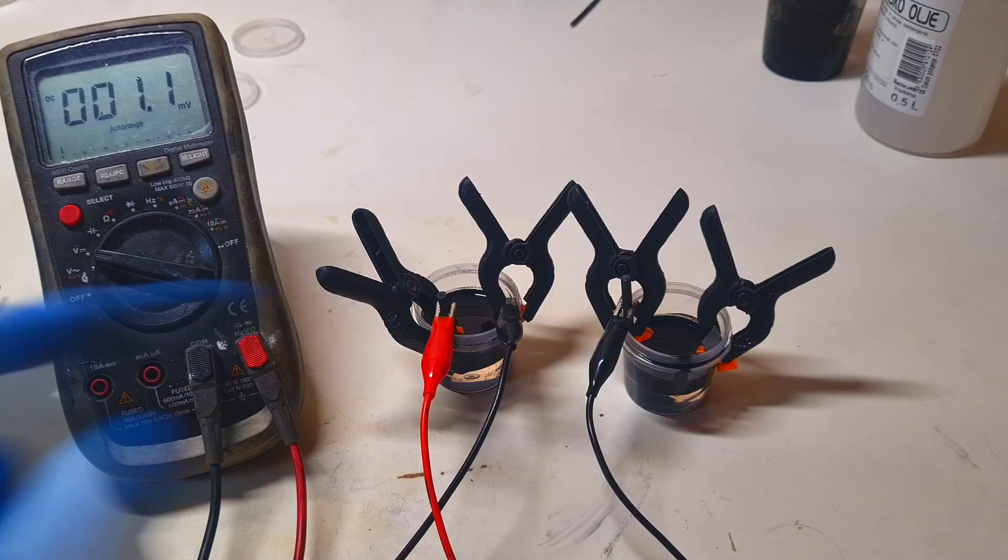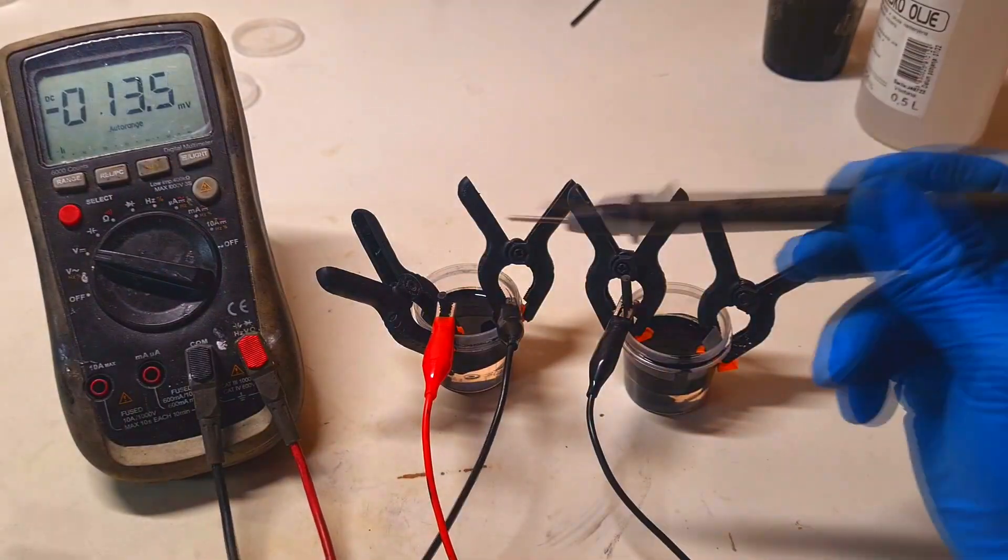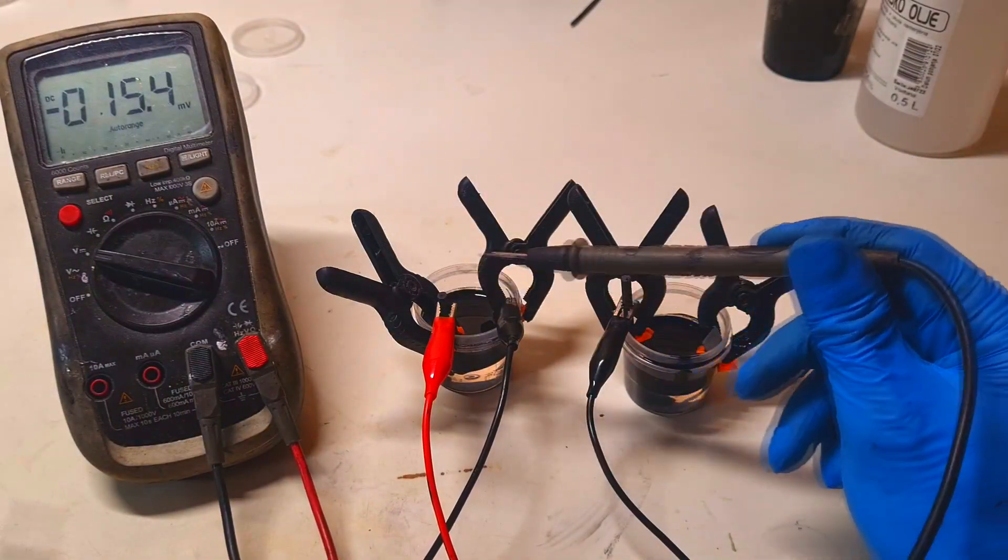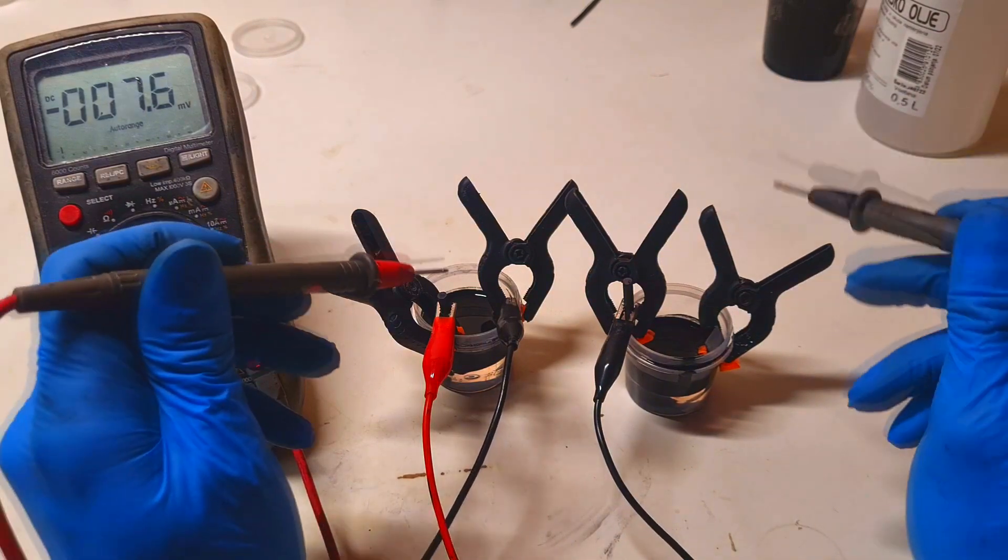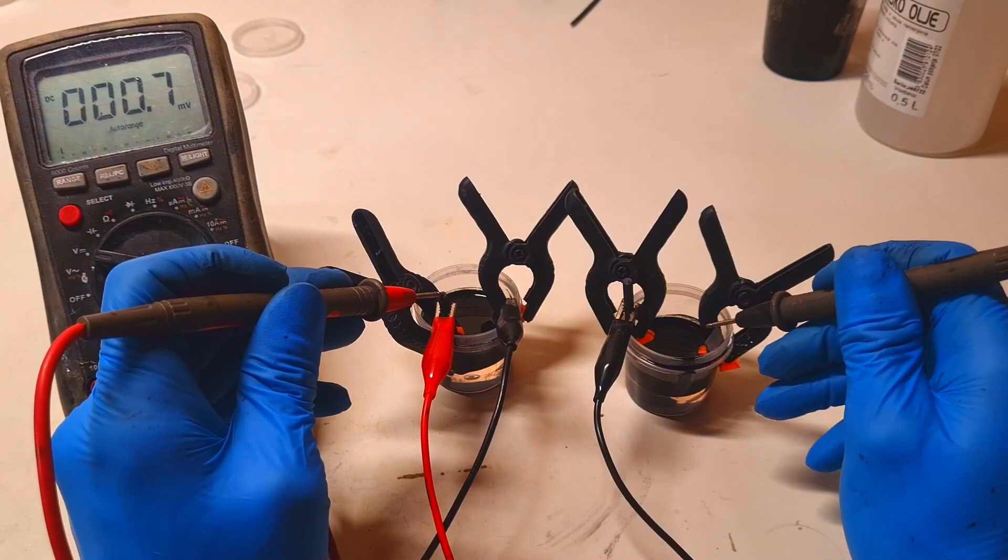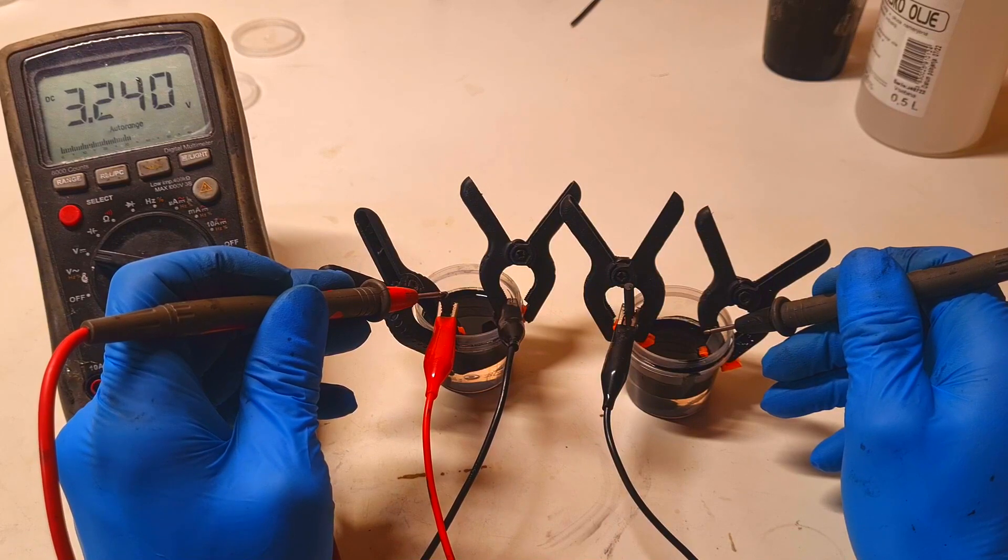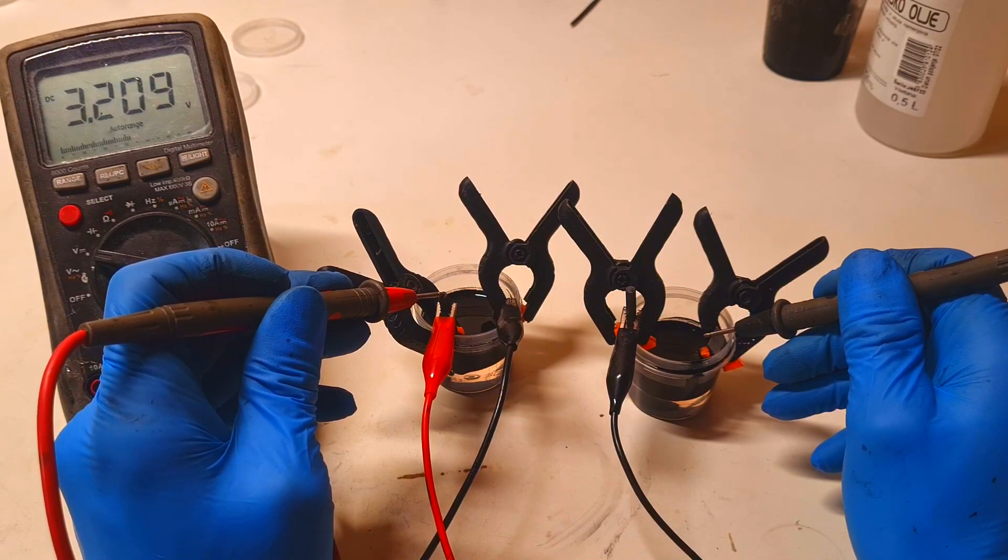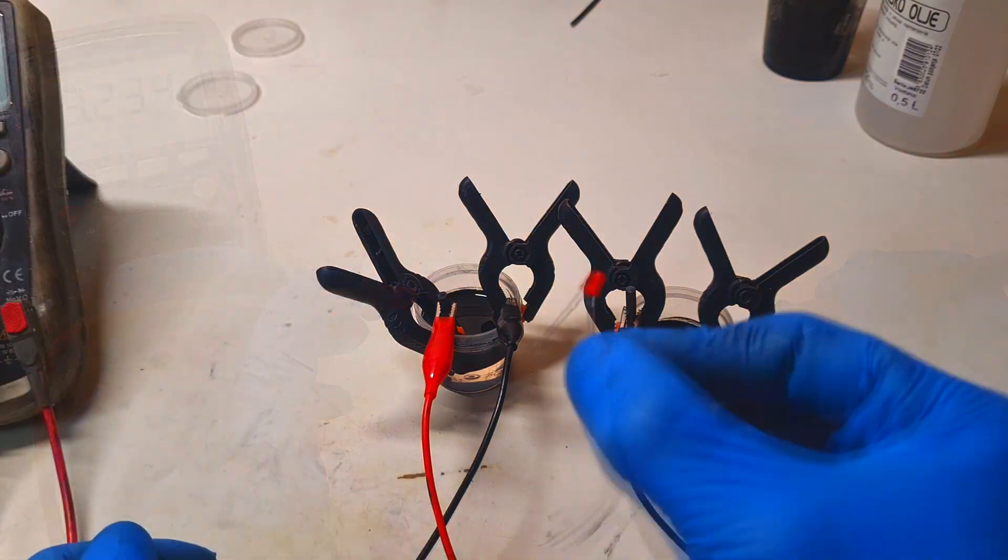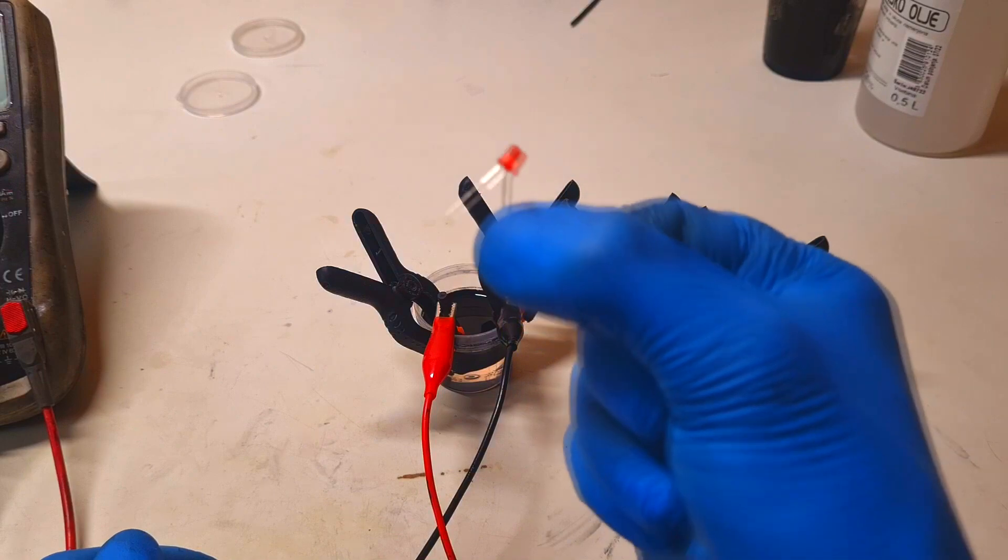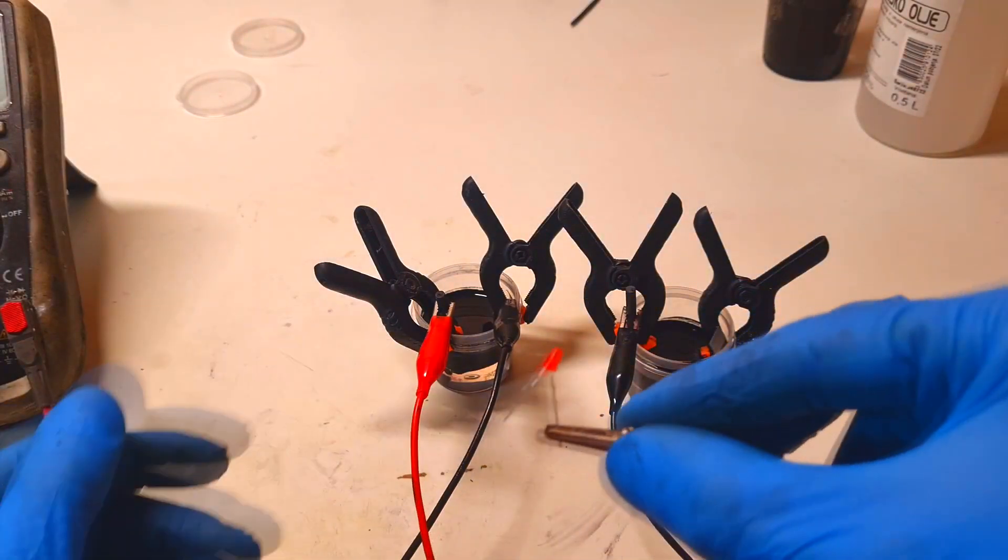And for the last I connected two membrane-free cells together. Here is the positive, the negative, positive, negative electrode. And the voltage of two cells right now is 3.2 volts. Here I have a small LED, and let's see if this kind of battery can light up this little LED.